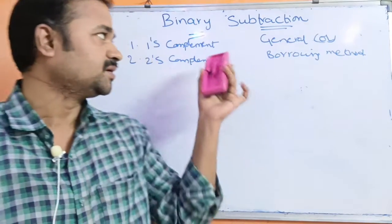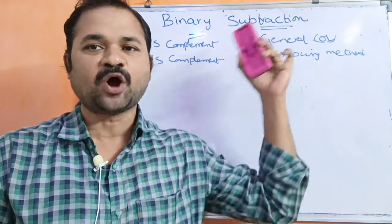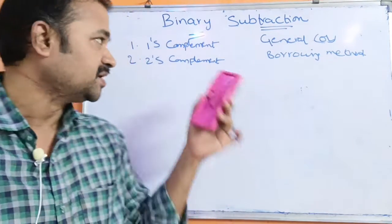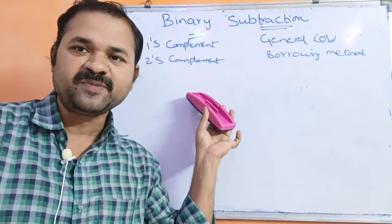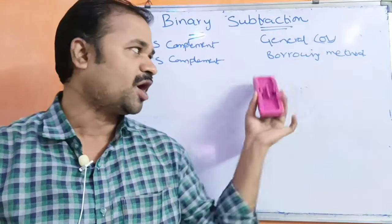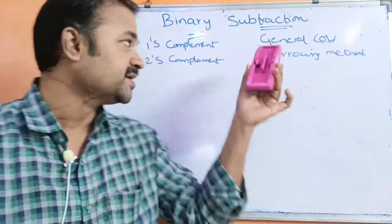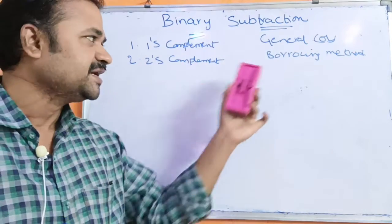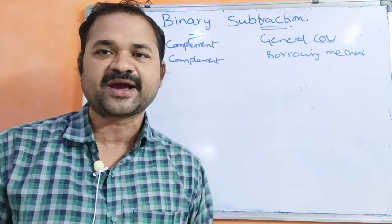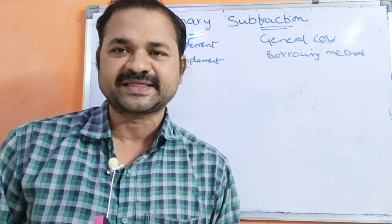Now let us discuss binary subtraction. We can perform subtraction on two binary numbers in two approaches. The first approach is using one's complement and two's complement. The second approach is the general or borrowing method. In this video, we are going to discuss binary subtraction using the first approach. In the next video, we will discuss how to do binary subtraction with the general method, also called the borrowing method.